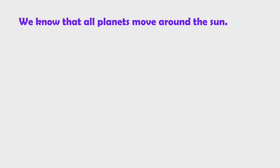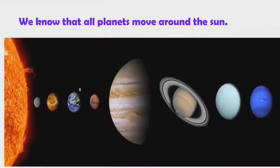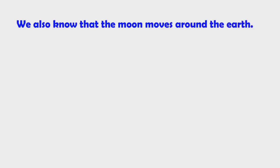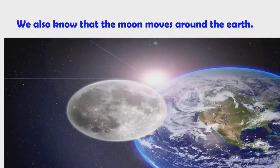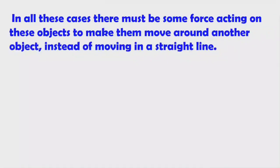All planets move around the sun, and the moon and artificial satellites move around the earth. In all these cases, there must be some force acting on these objects to make them move around another object instead of moving in a straight line.